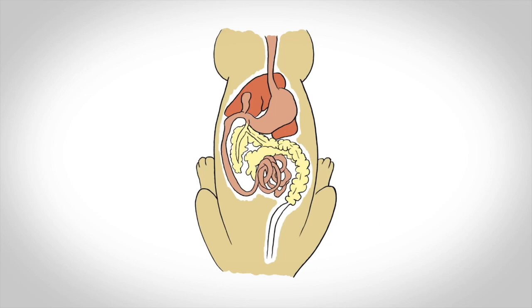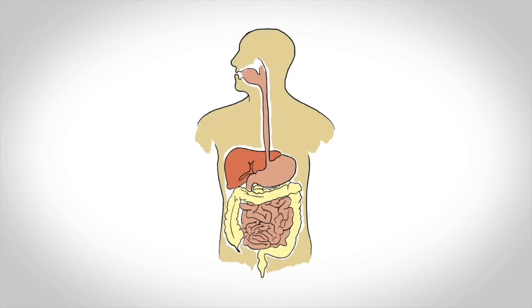Carnivores have a short digestive system that absorbs nutrients quickly and gets rid of toxic rotting meat quickly. Humans have a large digestive system that absorbs nutrients slowly.